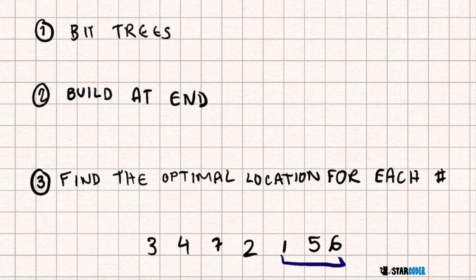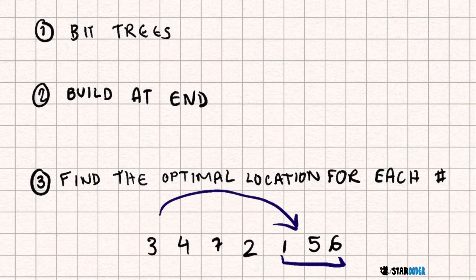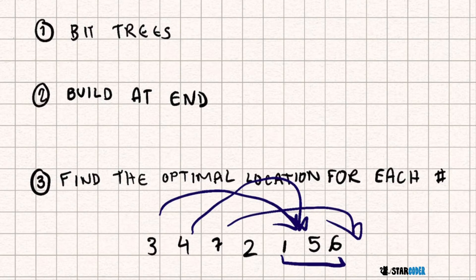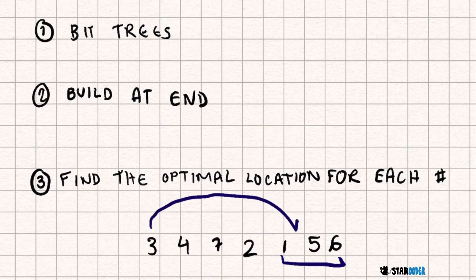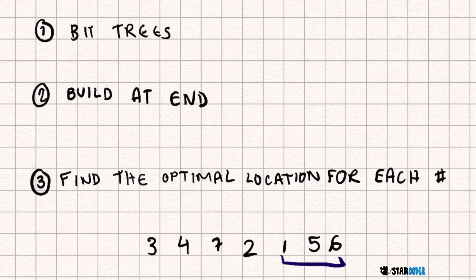The brute force method would be: start with 3, loop through the end sequence, and put 3 in its place; then 4, loop through again and place it; then 7, and so on. But this is where the Binary Indexed Tree (BIT) part of the algorithm comes in. Instead of that O(n²) approach, we're going to create a BIT for the ending sequence. We'll use the BIT to efficiently simulate inserting each element — 3, 4, 7 — into their corresponding positions.